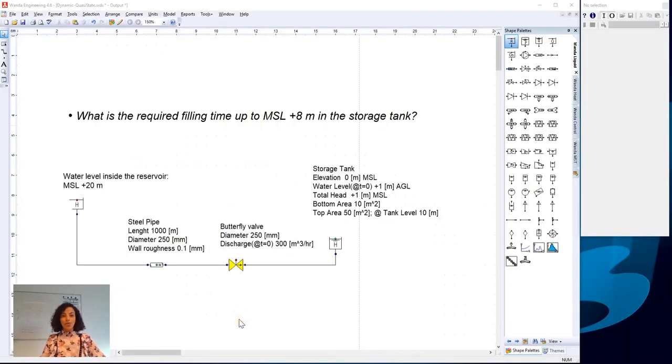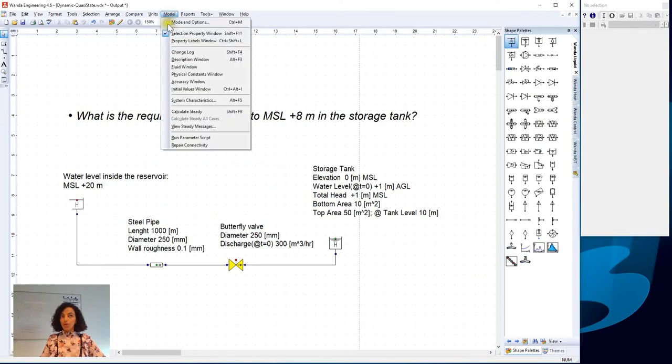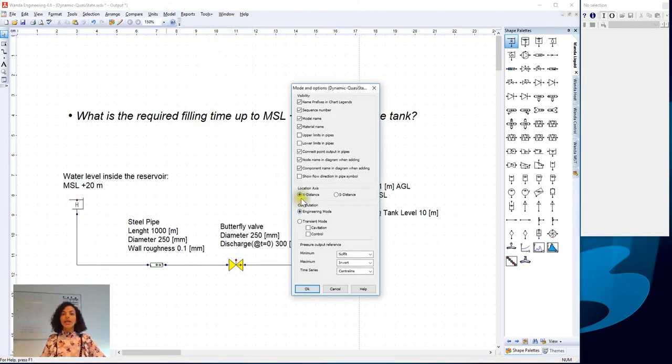Here we have our hydraulic model as before. We start by changing the computation settings. So we go to Model, Mode and Options, or equally we can press Ctrl+M, and in the computation settings we change from engineering mode to transient mode and we press OK.